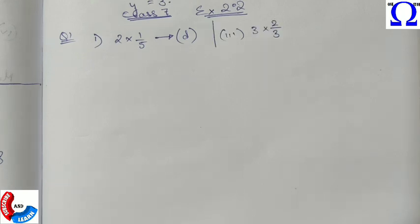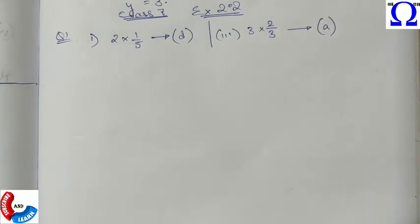Similarly, if I talk about 3 into 2 by 3, we need to search for a diagram in which two parts are shaded out of 3 parts, so that is the A part.